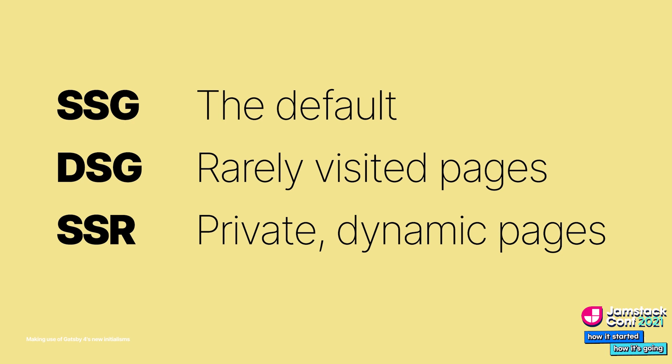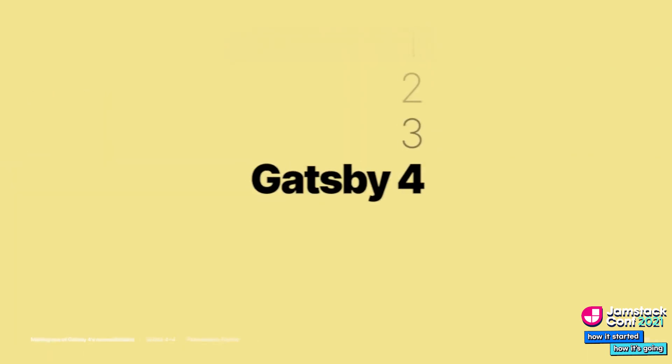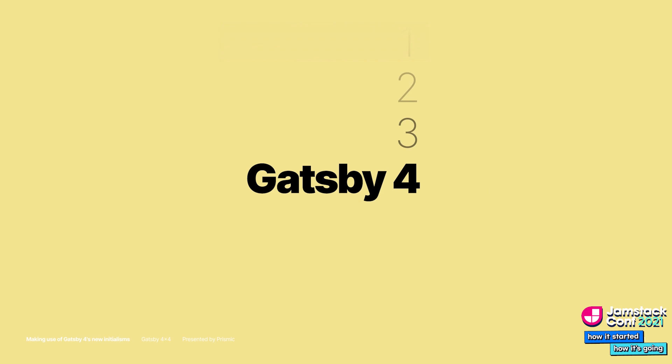If a page requires dynamic data or private information such as fetching user-specific data from an API, render the page on the server — this is SSR, which gives you the freedom to prepare anything you need on the server. Gatsby makes it simple to opt into these features; you don't need to think too much about it. To sum up, Gatsby 4 is still Gatsby — one of the best ways to build quick, performant sites. Gatsby 4 now makes your build more performant with DSG and enables you to build full app experiences with SSR.